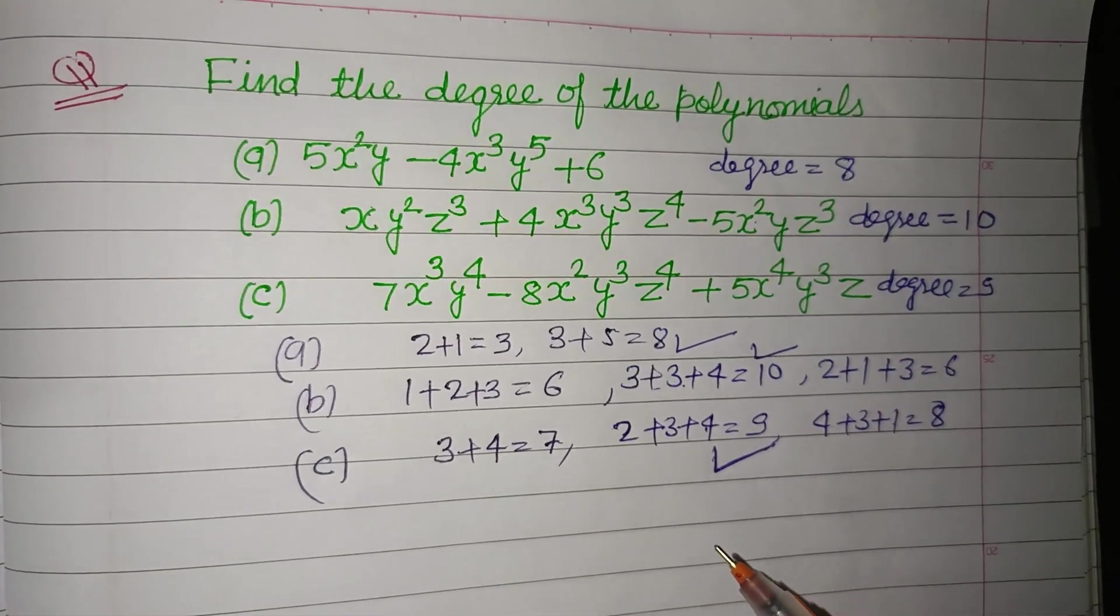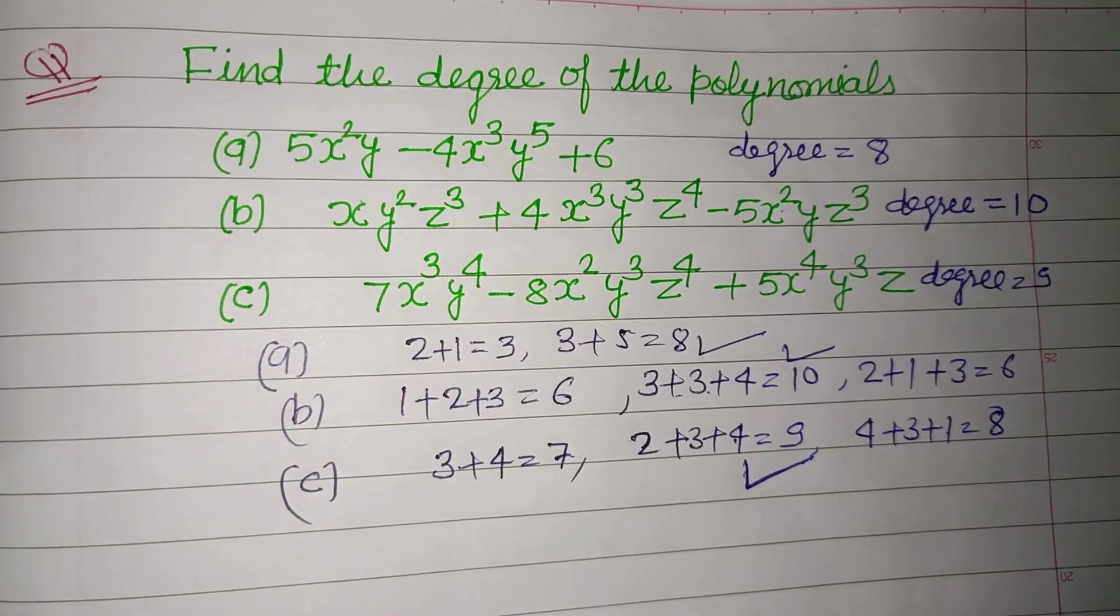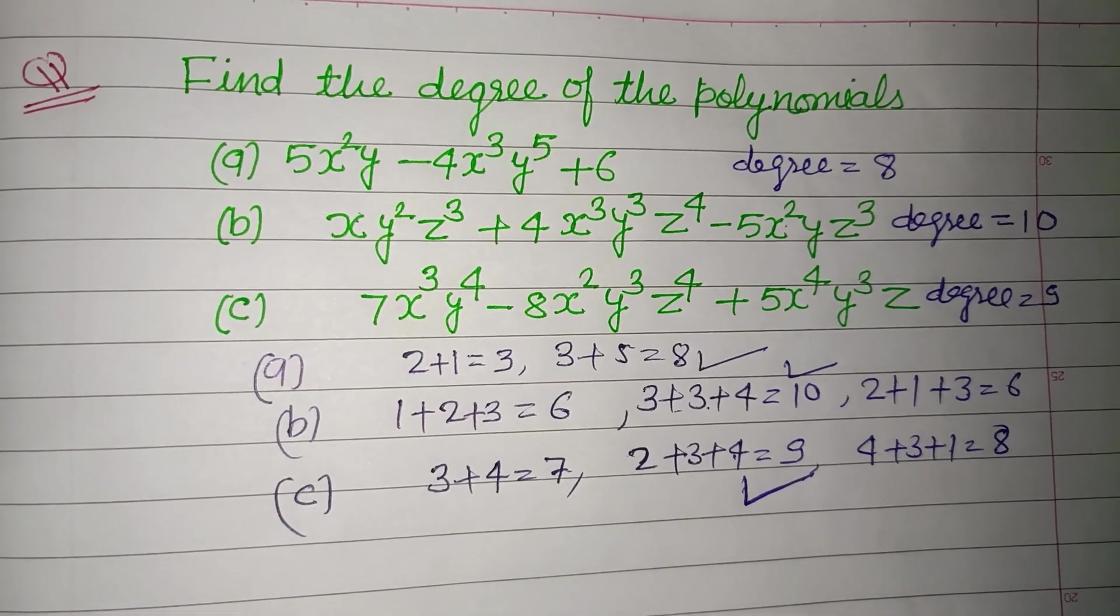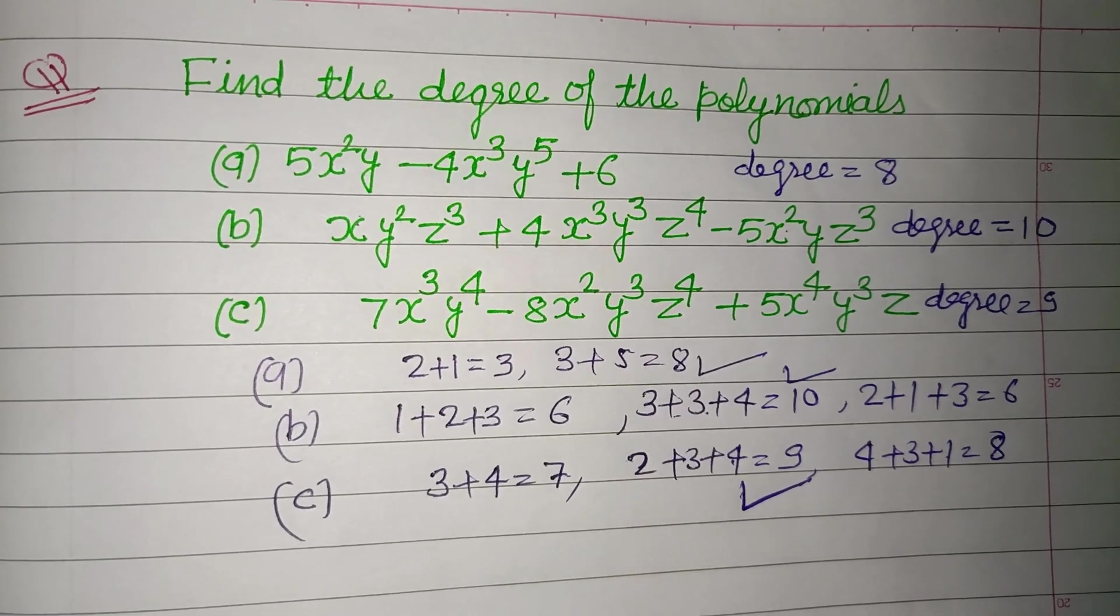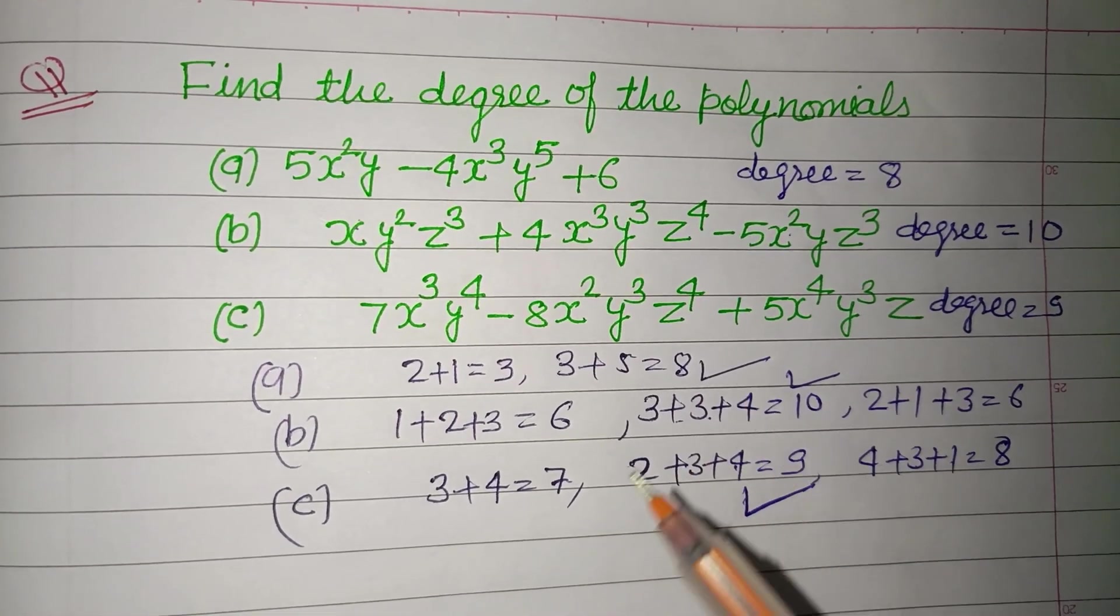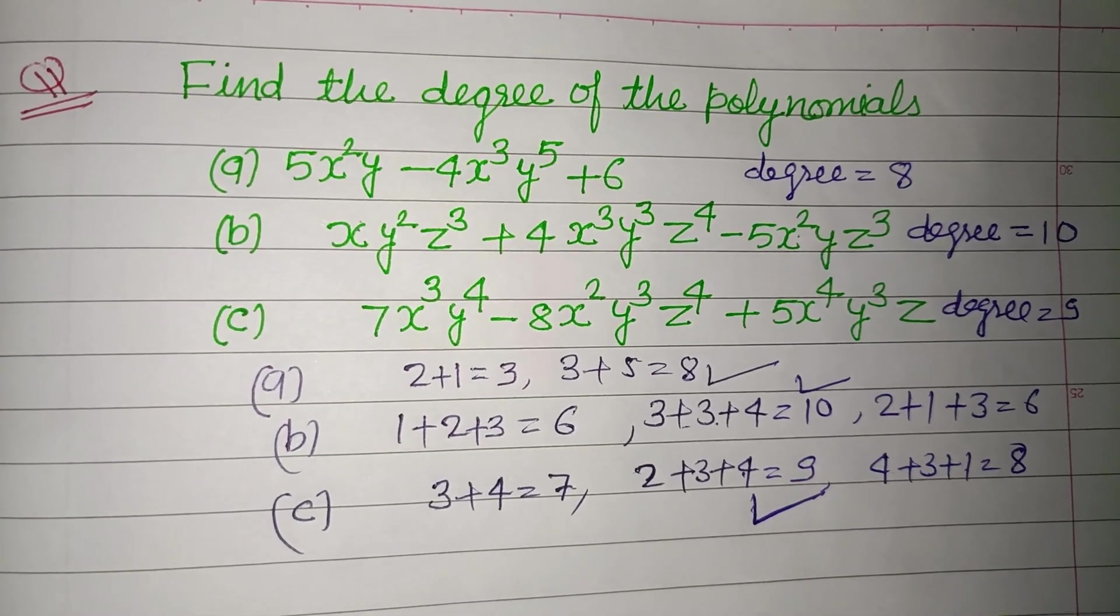So I hope you understand how to find degree of a given polynomial. We add the powers of the variables in each term. The term which have greatest power is the degree of the polynomial. I hope you got it.